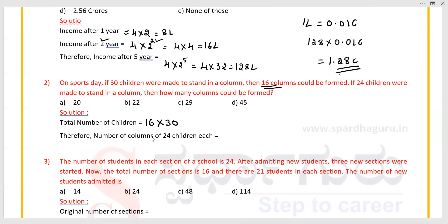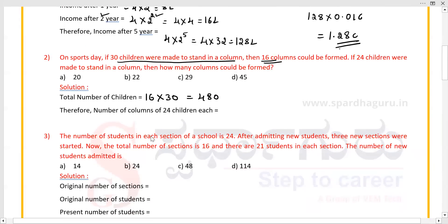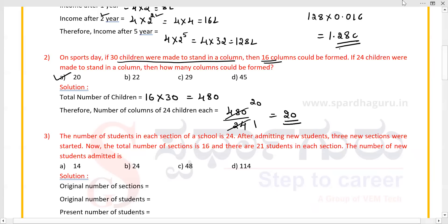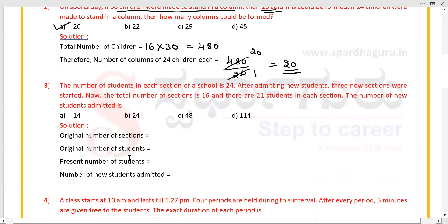16 multiplied by 30 equals 480 total children. Now find out the number of columns where 24 children stand in each column: 480 divided by 24 equals 20. So 20 columns are required where 24 children stand in each column. Option A is the right answer.